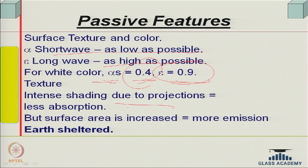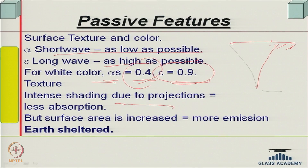Intense shading due to projection is possible, resulting in less absorption. We can also have earth-sheltered buildings — put a building partly below the earth. Earth temperature below the ground does not change much, while the surface temperature changes significantly. In summer, surface temperature is high but it is low below ground; in winter it is the other way round. About 4 meters or so below the surface, temperature tends to stabilize and variation is not much.